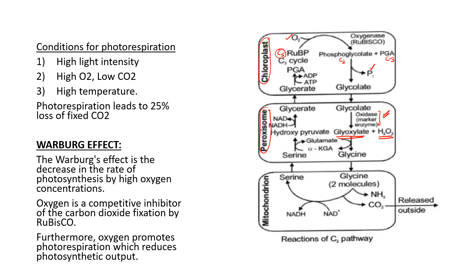Formation of glycine and alpha-ketoglutaric acid occurs through transamination, a process in which an amine group is transferred from one amino acid to a keto acid to make another amino acid. Glycine, the simplest amino acid, is then passed to the mitochondria, where two molecules of glycine make one molecule of serine. During serine formation, carbon dioxide is liberated, ammonia is also liberated, and NADH is formed.